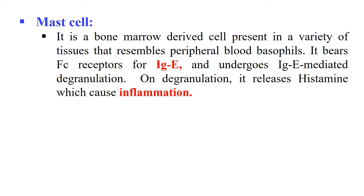Next, Mast Cell. It is a bone marrow-derived cell present in a variety of tissues. These cells have FC receptors specific for immunoglobulin E (IgE). IgE recognizes its receptor on the mast cell and binds to it. After binding, it degranulates the mast cell, releasing a chemical known as histamine, which ultimately causes inflammation. So mast cells are involved in inflammation.